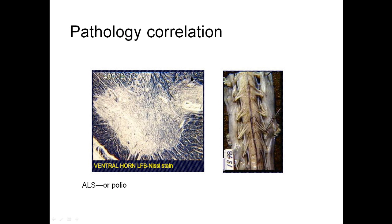A little pathology correlation: this patient has no anterior horn cells due to polio. Polio wipes out the lower motor neurons. The result is flaccid paralysis and hypotonia of the muscles. This slide is meant to show that the ventral roots have degenerated due to polio at this level.